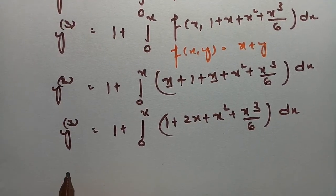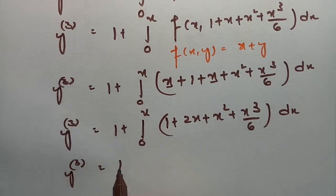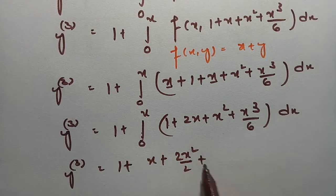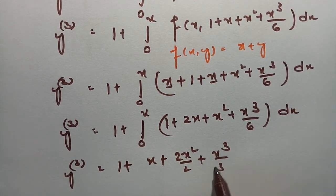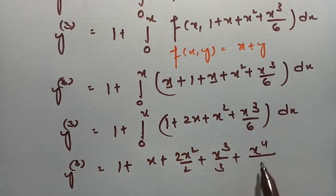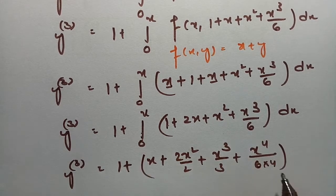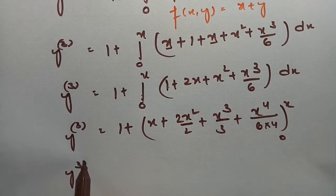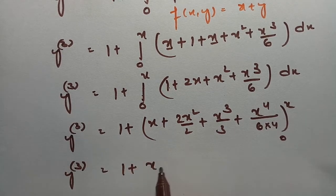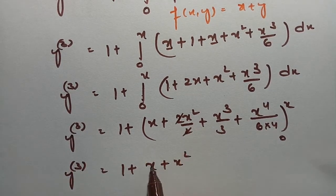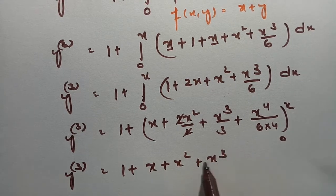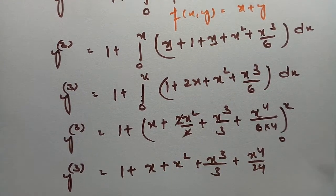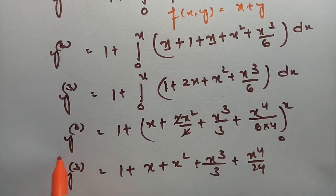Integrating, y₃ = 1 + [x + x²/2·2 + x³/3 + x⁴/24] from 0 to x. Therefore the third approximation is y₃ = 1 + x + x²/2 + x³/3 + x⁴/24.